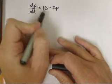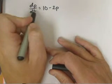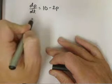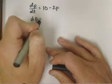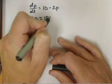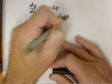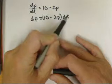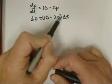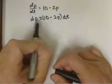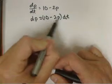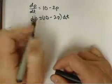The way we're going to do that is I'm going to basically cross multiply the dt, and that gives me dp equals 10 minus 2p dt. What I notice is I have a p over here and a t over here. I don't want that. Separation of variables means I need to collect the variables on the same side. So I'm going to divide both sides by 10 minus 2p.